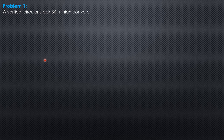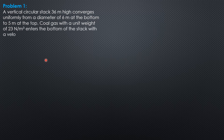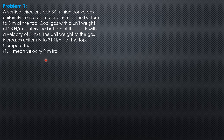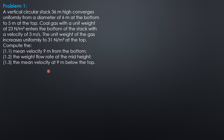Hello everyone, this is the solution to example 1 on the fundamentals of fluid flow. A vertical circular stack 36 meters high converges uniformly from a diameter of 6 meters at the bottom to 5 meters at the top. Coal gas with a unit weight of 23 newtons per cubic meter enters the bottom of the stack with a velocity of 3 meters per second. The unit weight of the gas increases uniformly to 31 newtons per cubic meter at the top.